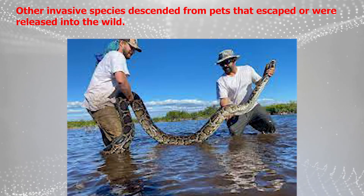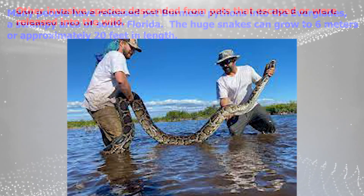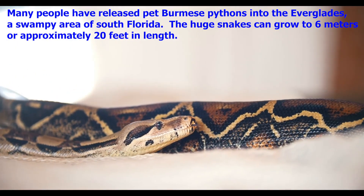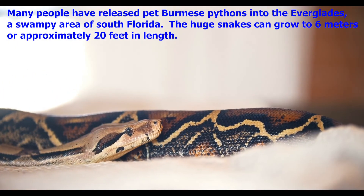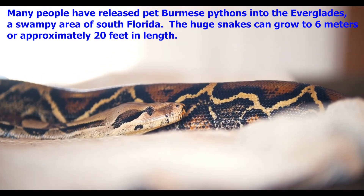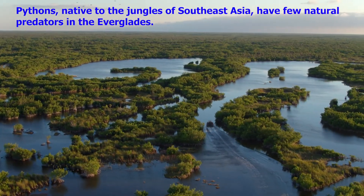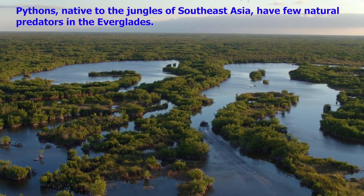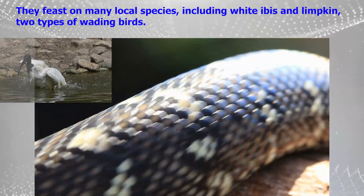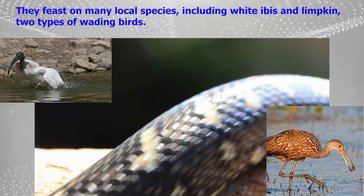Other invasive species descended from pets that escaped or were released into the wild. Many people have released pet Burmese pythons into the Everglades, a swampy area of South Florida. The huge snakes can grow to 6 meters, or approximately 20 feet, in length. Pythons, native to the jungles of Southeast Asia, have few natural predators in the Everglades, and they feast on many local species including white ibis and limpkin, two types of wading birds.